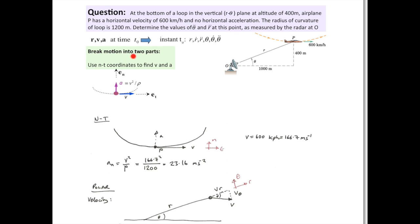So, the key of course is to break into two parts, use normal tangential coordinates to find V and A to begin with, and then translate that into polar coordinates.